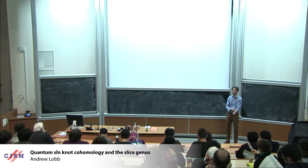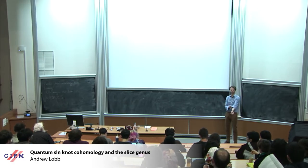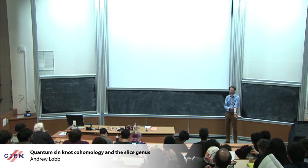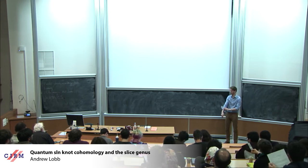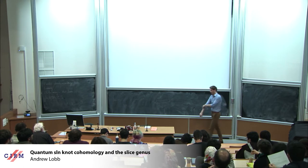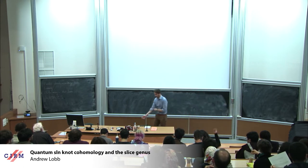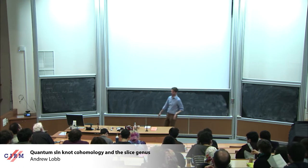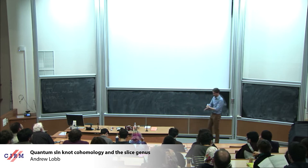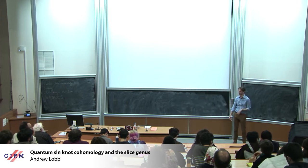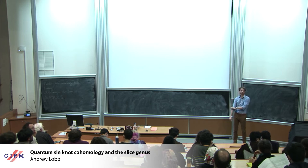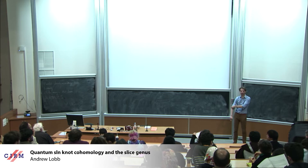Thanks very much. Thanks to the organisers for the invitation to speak. It's a pleasure to be here. The topological objects I'm going to be talking about are the smooth concordance group of knots and the smooth slice genus, otherwise known as the smooth four-ball genus of knots.